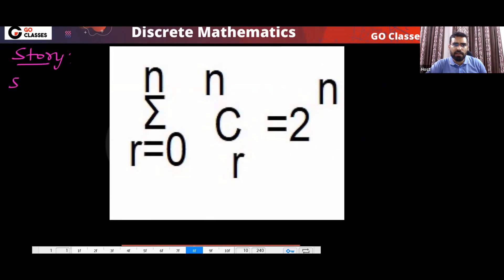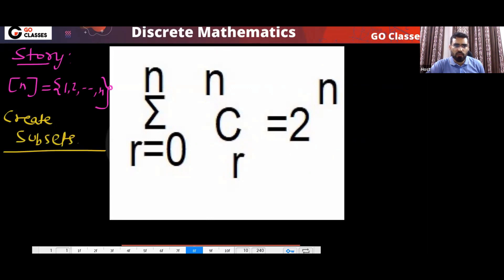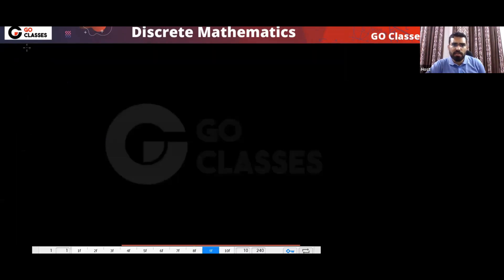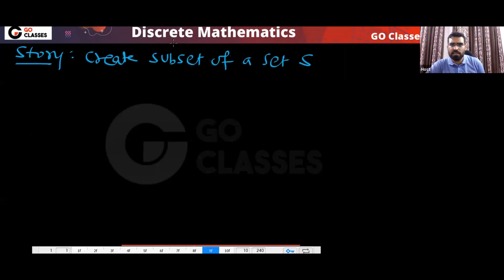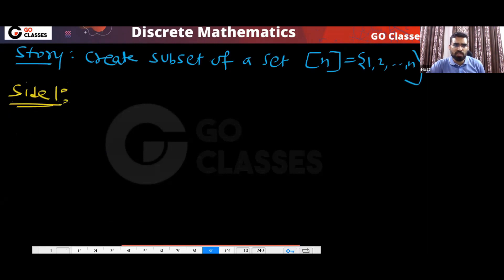Let's assume you have a set of elements one to n. This is your set. Create subsets — that is your story. Side one of the story: the number of subsets of a set of n elements is two power n.